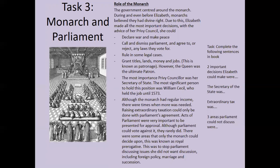During and even before Elizabeth, monarchs believed they had divine rights — they were chosen by God — so they made the most important decisions with the advice of the privy council. With this advice, Elizabeth could declare war and make peace, call and dismiss parliament, and agree to or reject any laws they voted for. She could rule in some legal cases and grant titles, land, money, and jobs — this was known as patronage, a way to keep the people below her happy. The queen was the ultimate patron, giving out titles, land, money, and jobs to show loyalty, though all had to show obedience and respect in return.